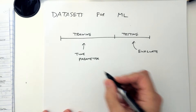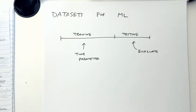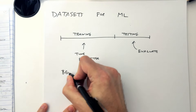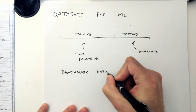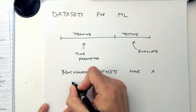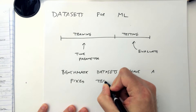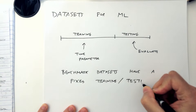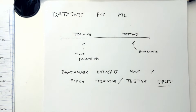This idea of separating data into parts is called a split. Benchmark datasets have a fixed training/testing split, meaning when you download a dataset, a set of say 10,000 vectors is your training data and 2,000 vectors is your testing data, and that split is fixed for everyone who evaluates their algorithm. If everyone got to make their own split, we couldn't easily compare different algorithms on the same dataset - everyone has to be on the same level playing field.